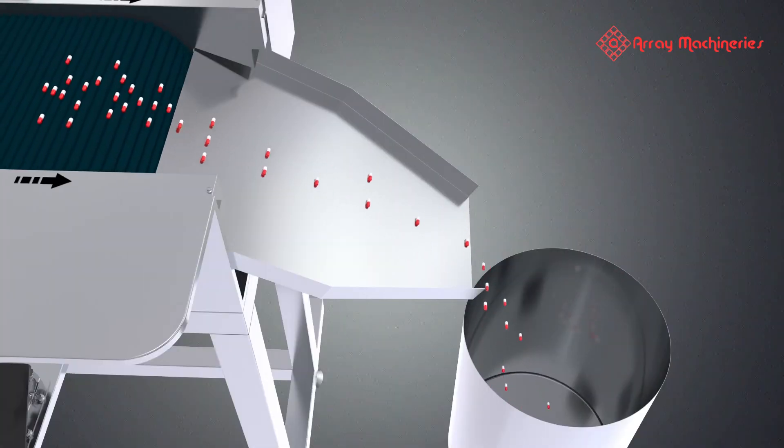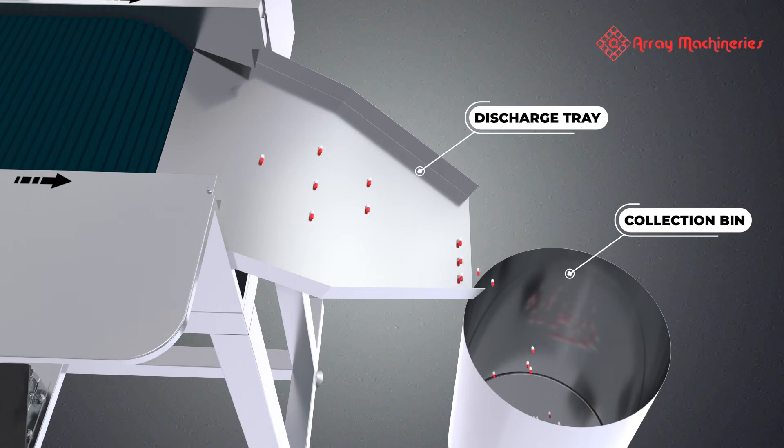The good tablets pass forward and are then collected into the collection bin through the discharge chute.